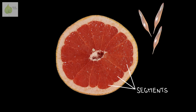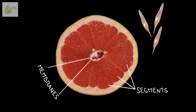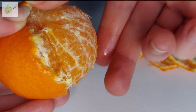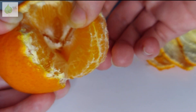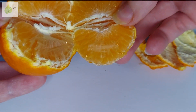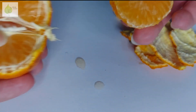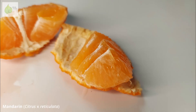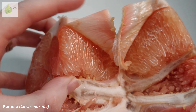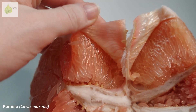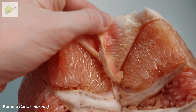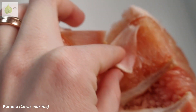The juice vesicles are arranged within segments in a citrus fruit. These segments are clearly defined by membranes. While the pulp is juicy, sweet and pleasant to eat, the membranes can ruin the citrus taste with their bitterness, so you might want to remove them before eating. In some citrus the membranes are super thin and without much taste, but in others, like a pomelo, the membranes can be thick, leathery and almost un-chewable.